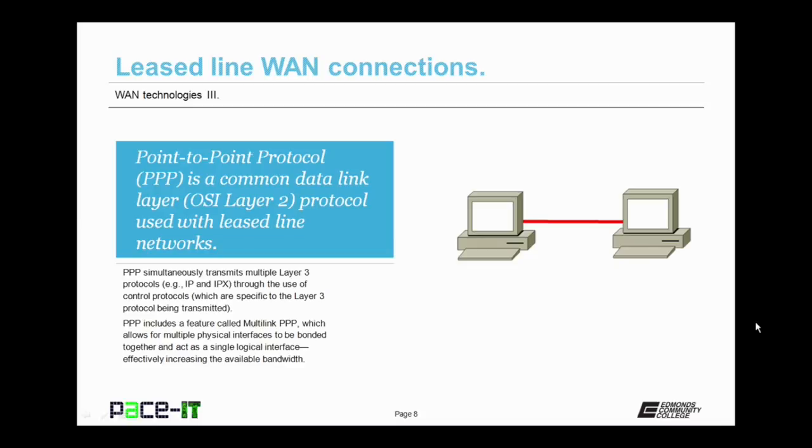One of the leased line technologies that you need to know about is Point-to-Point Protocol, PPP. It is a common data link layer, or Layer 2, protocol that's used with leased line networks. PPP can simultaneously transmit multiple Layer 3 protocols. It can transmit IP and IPX and AppleTalk all at the same time through the use of control protocols, which are actually specific to the Layer 3 protocol that's being transmitted.